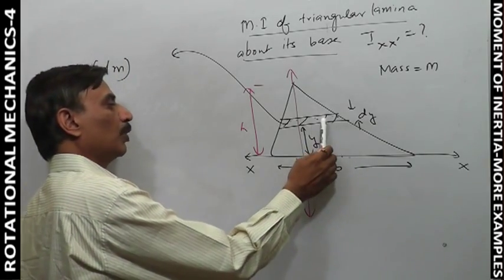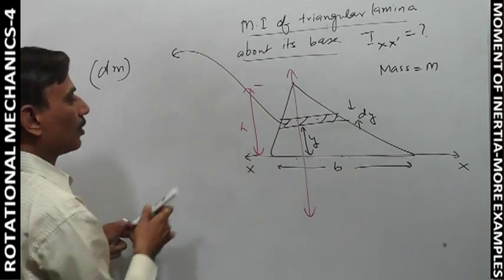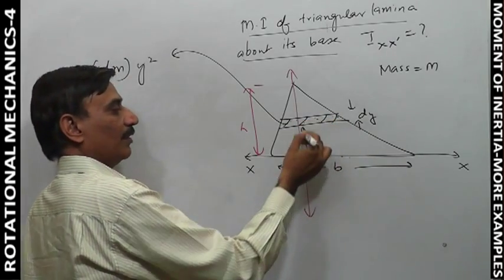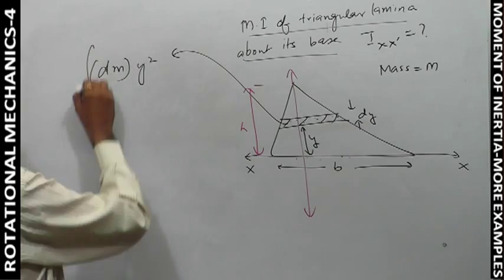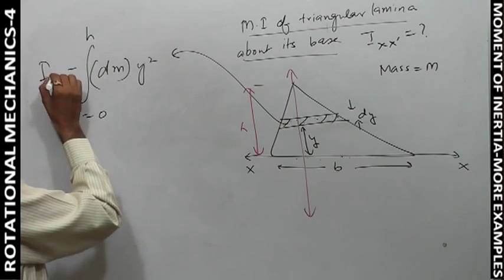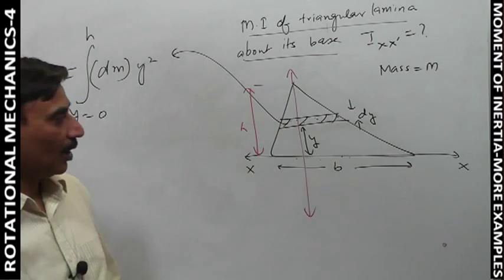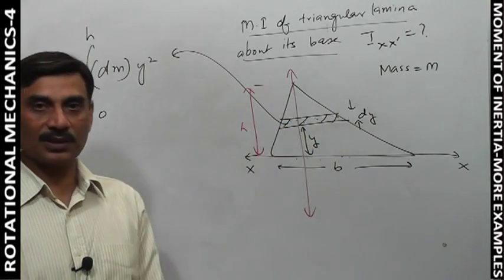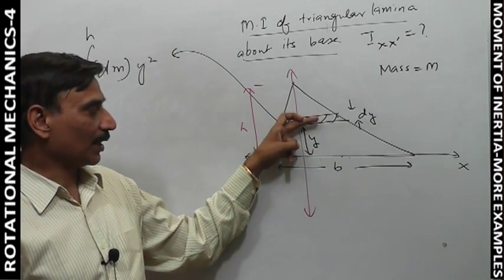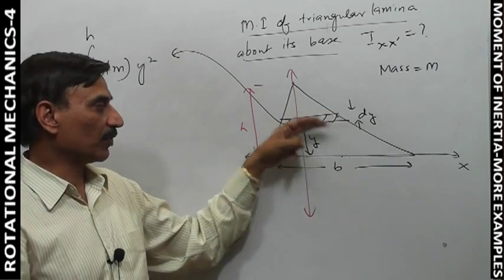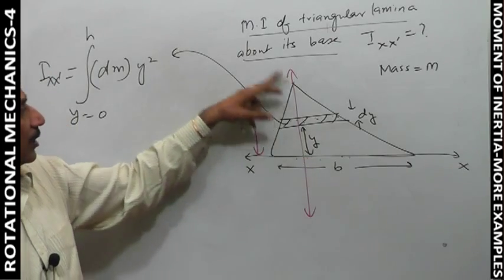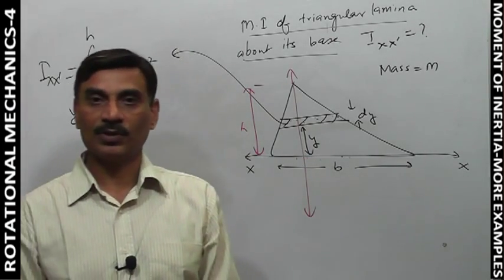The strip's moment of inertia about this axis is dm·y². We will integrate this from y=0 to y=h. So dm·y² is the strip's moment of inertia about this axis, and we integrate from zero to h to get the total moment of inertia.